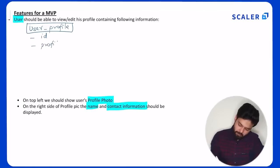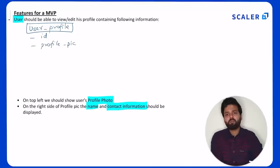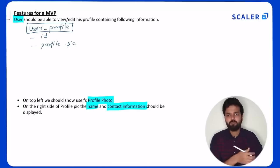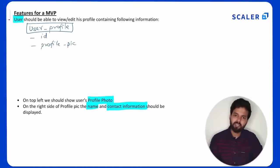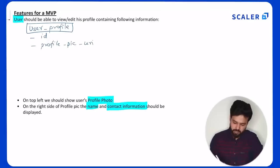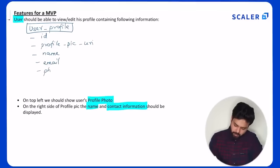Let's add these attributes inside the user profile entity. Profile pic can be stored in two places — one is in the database itself, but storing images there requires very large storage. So it's wise to store all images and video links associated with a profile into a file store like S3 or a CDN. Instead of storing the profile pic directly, I'll store the URI which will correspond to S3, CDN, or any other file store. The next information to store is name and contact information in the form of email, phone number, or both.